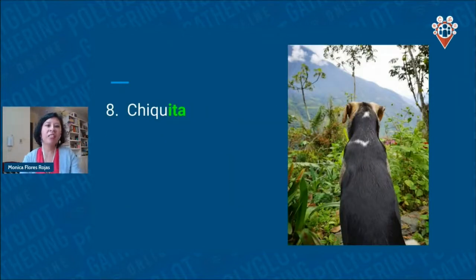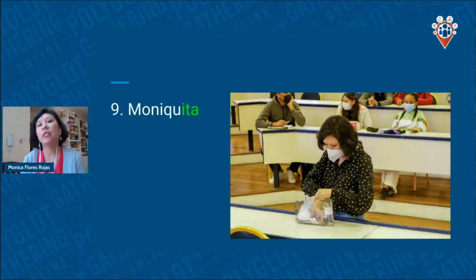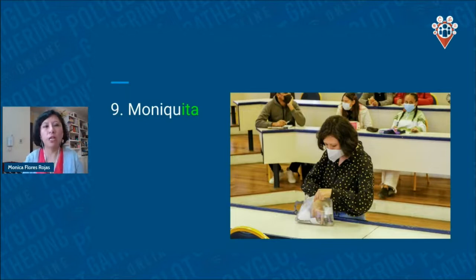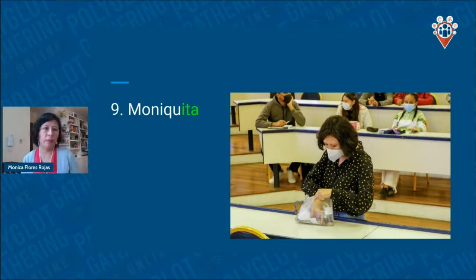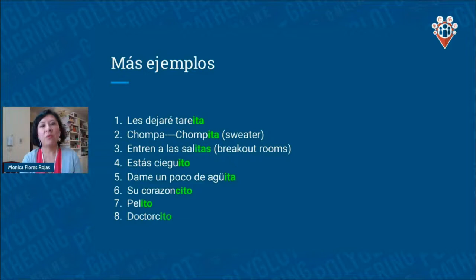Here's a picture of a dog I rescued — her name is Chiquita, already a diminutive form of 'chica.' We can also make diminutives with names: my name Monica becomes 'Moniquita,' and even as a grown-up people call me that because they want a favor or want to sound affectionate. Another example from the professor: 'entren a las salitas' for breakout rooms — instead of 'salas,' he used the diminutive 'salitas.'